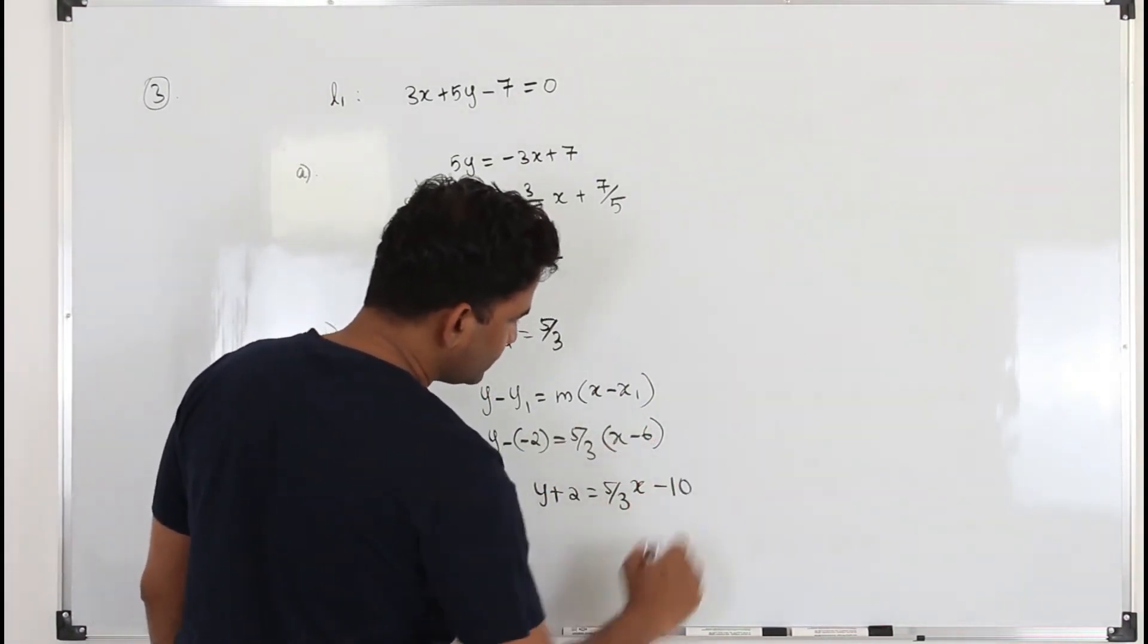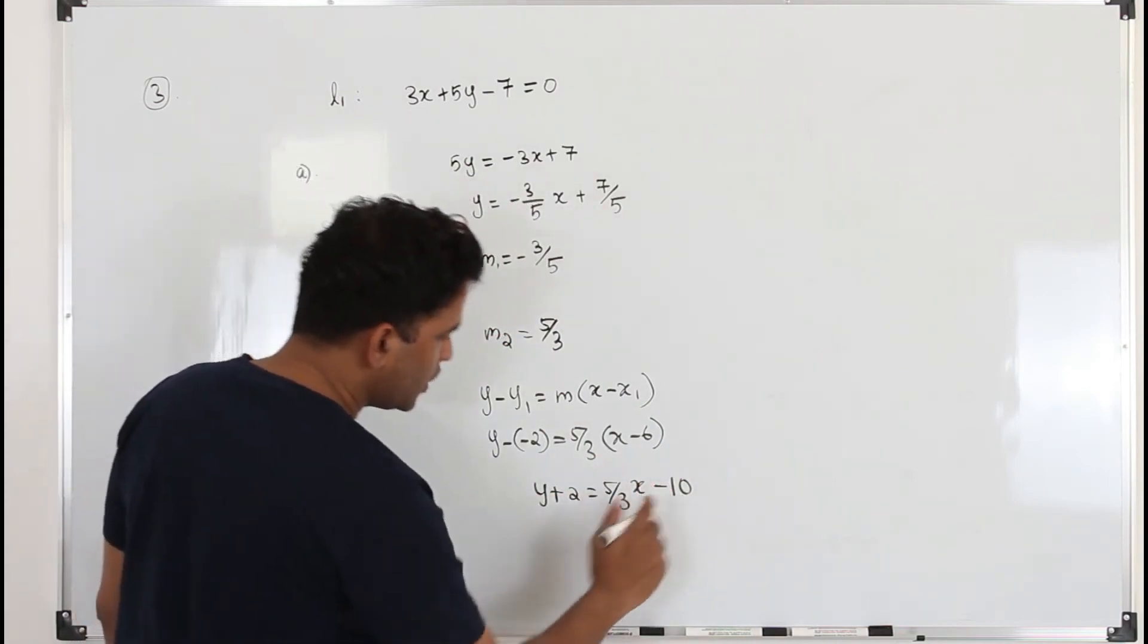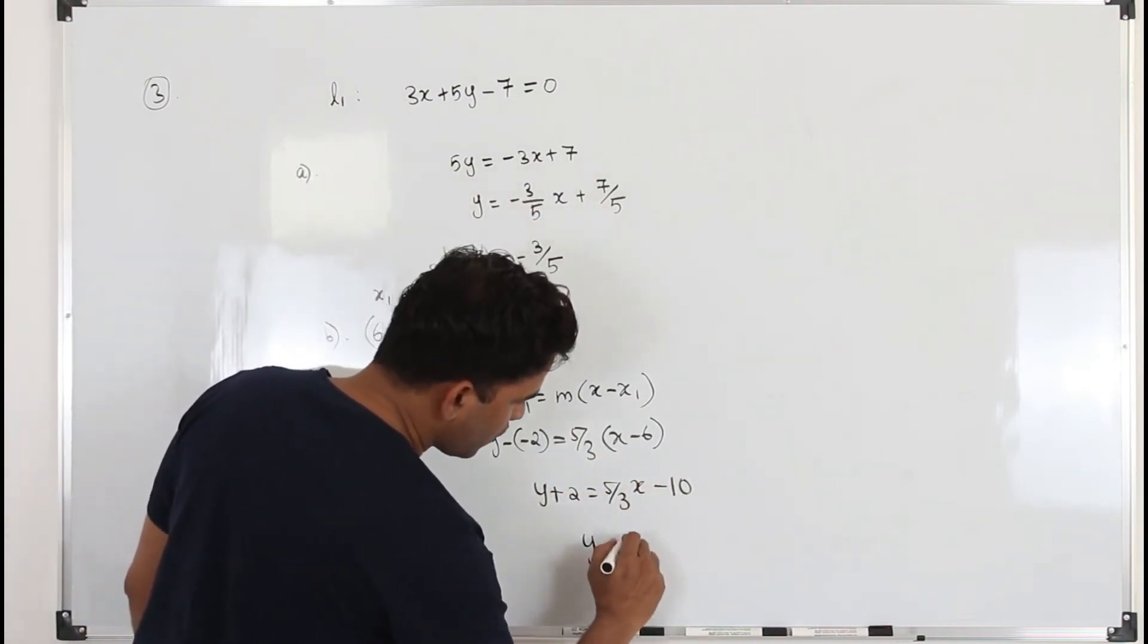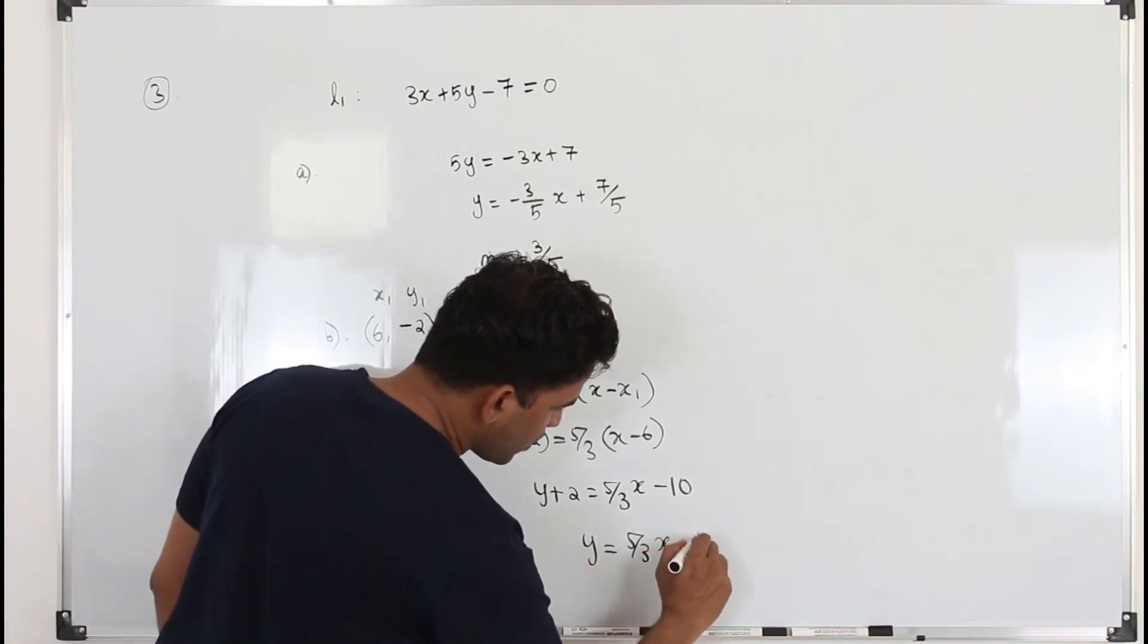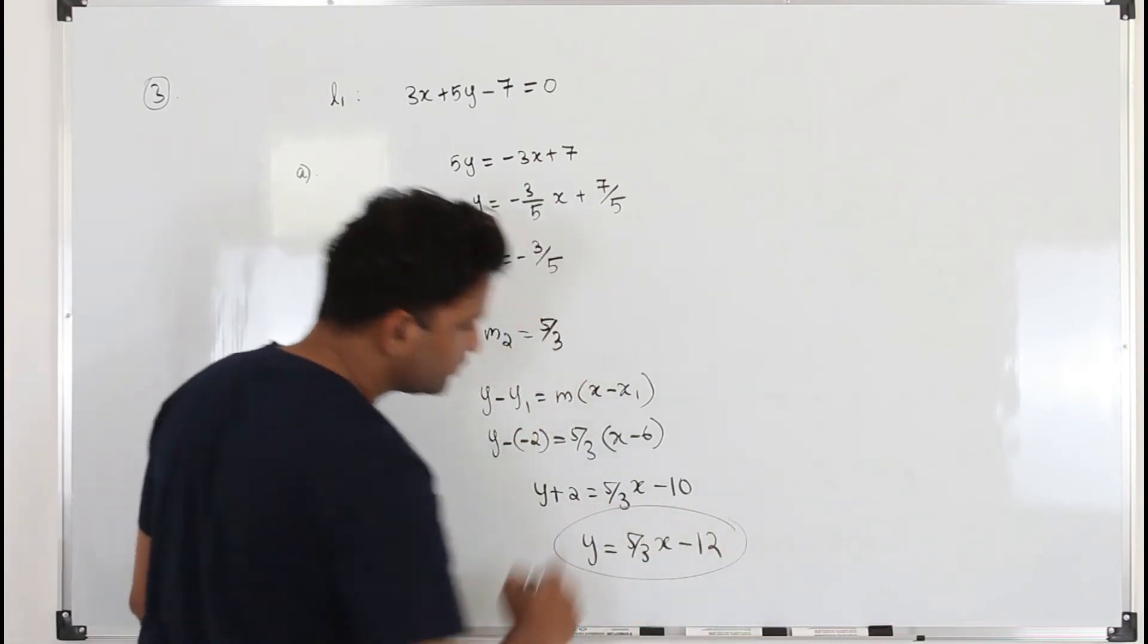y plus 2 is 5 over 3x minus, if you multiply this, 10. 30 divided by 3 is 10. Bring the 2 here. So y is 5 over 3x minus 12. That's the equation.